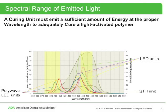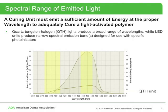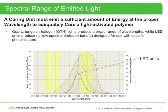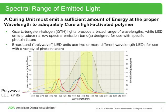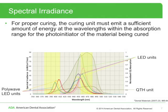A curing unit must emit a sufficient amount of energy at the proper wavelength to adequately cure a light-activated polymer. This figure displays representative spectral emission curves for several single-peak LED curing units, along with a few poly-wave LED curing units and a quartz tungsten halogen unit. Quartz tungsten halogen lights produce a broad range of wavelengths, while LED units produce narrow spectral emission bands designed for use with specific photo initiators. Broadband or poly-wave LED units use two or more different wavelength LEDs for use with a variety of photo initiators. For proper curing, the curing unit must emit sufficient energy at wavelengths within the absorption range for the photo initiator of the material being cured.